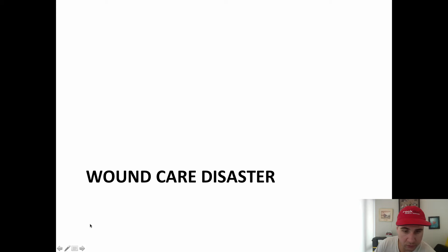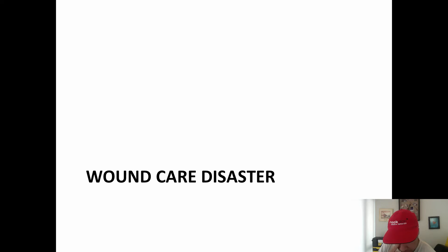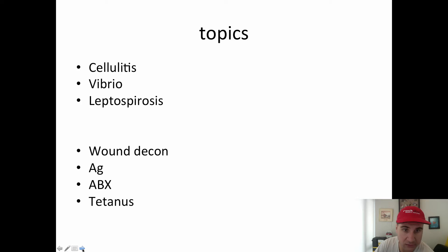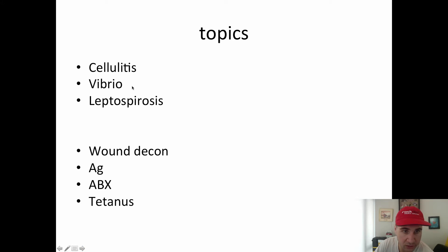This is the shorty for the wound care disaster. I just did a two-part series — if you want to see the first part, go to the link at the bottom and it will bring you to the longer version. But this is the short part, so let's get started. We'll be talking about wounds that you can get in a disaster — mainly three major categories: cellulitis, Vibrio, and Leptospirosis, and some of the treatments that come with them.